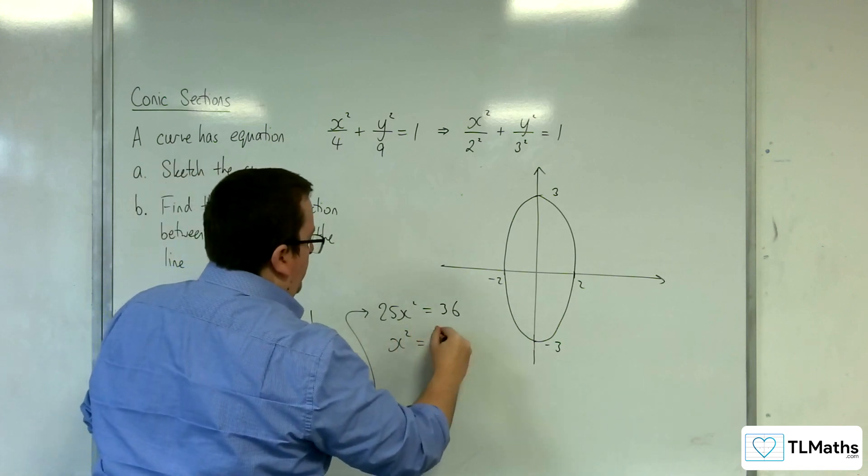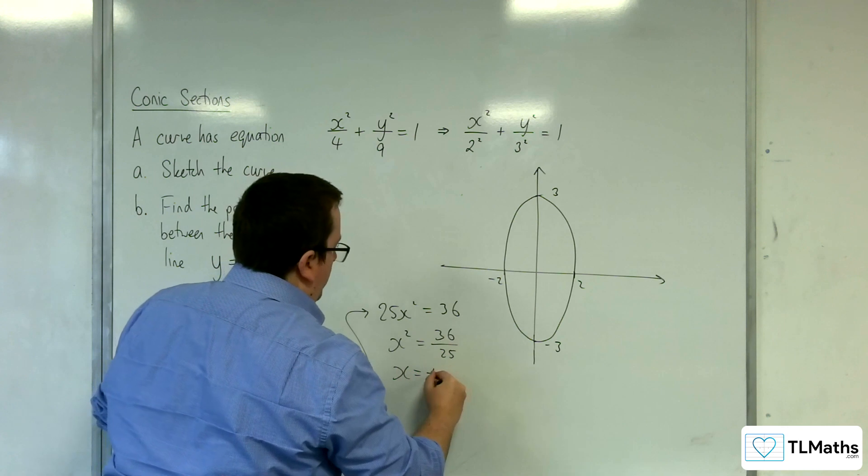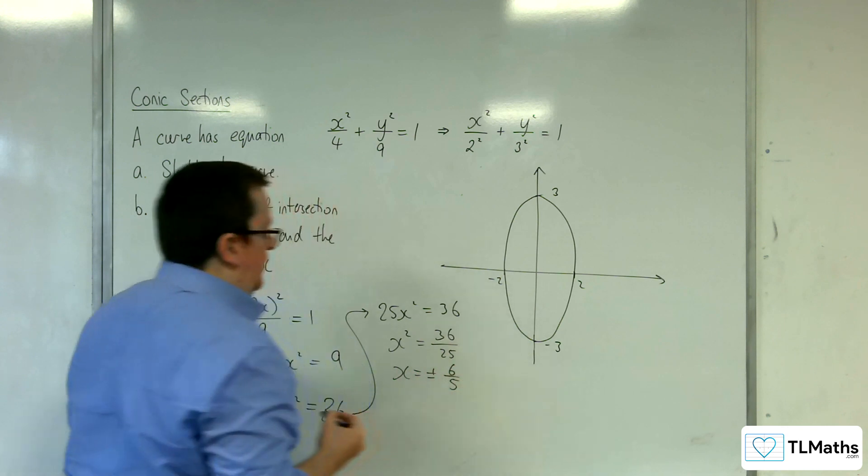So then x squared must be 36 over 25. So x is plus or minus 6 fifths.